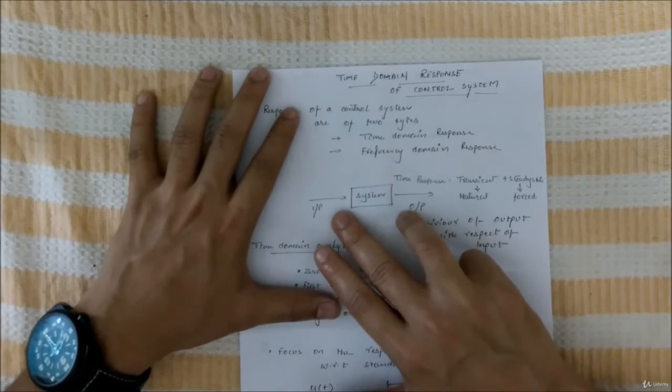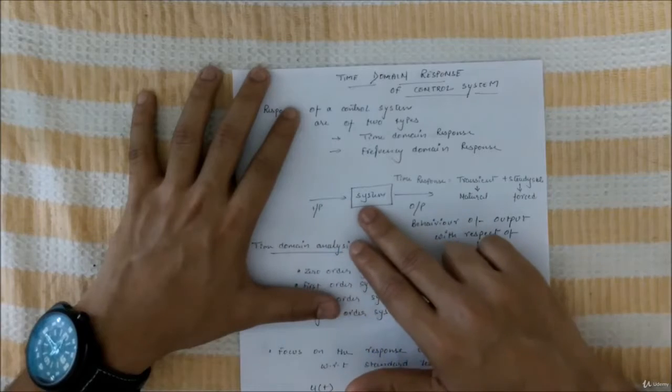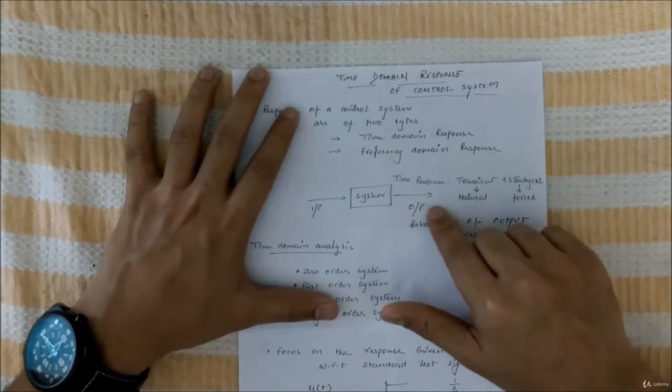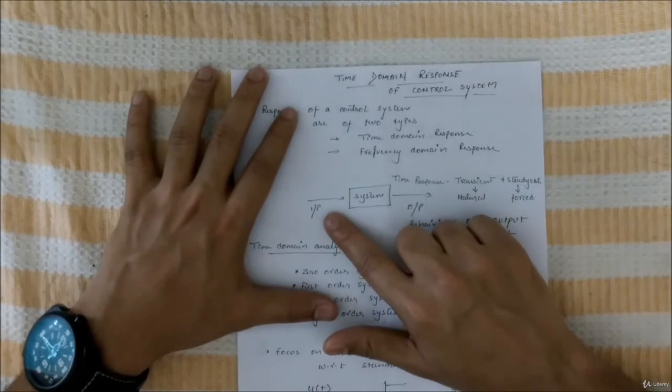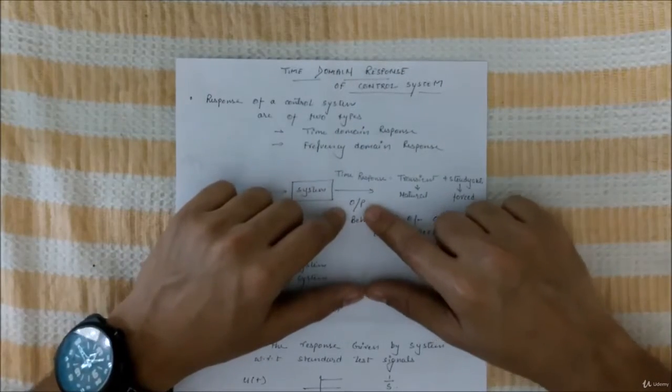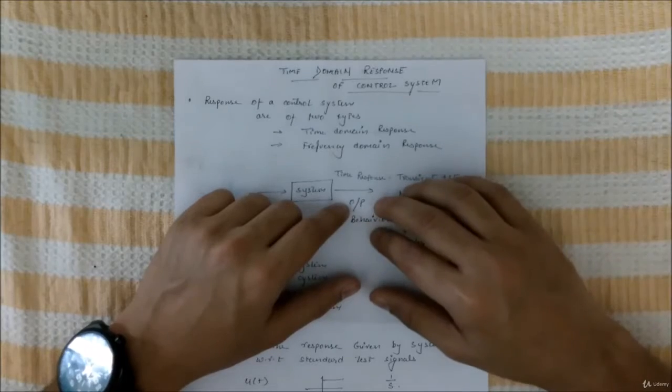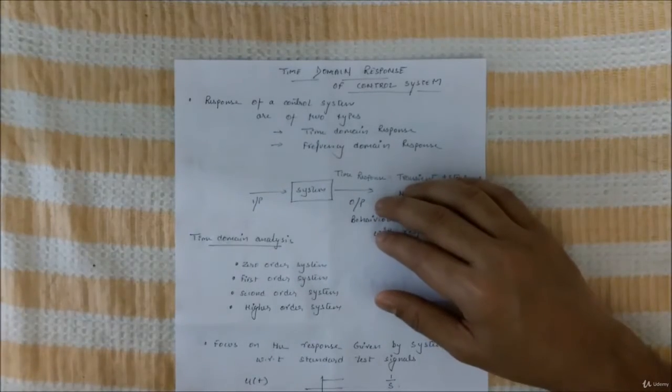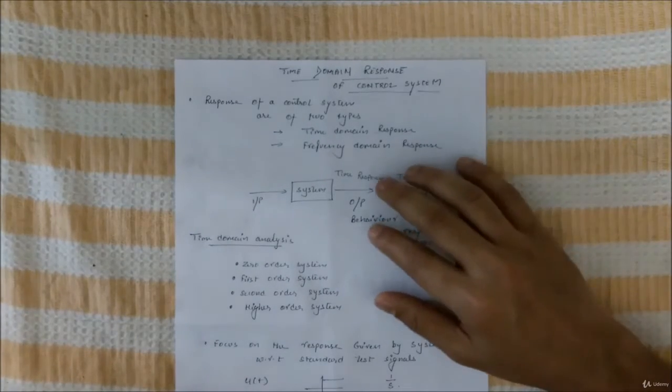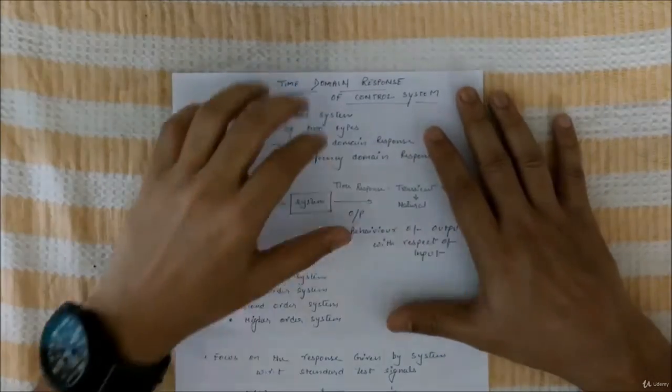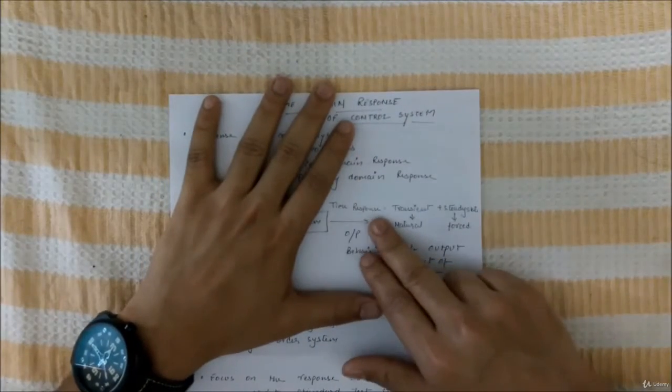A control system will be given, it will be subjected to a particular input and will get an output corresponding to that particular input. We'll see the graphs of this output and check the time domain parameters and how it is useful in designing our system.